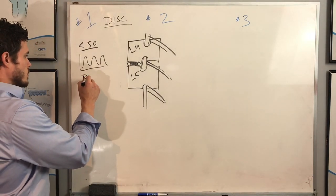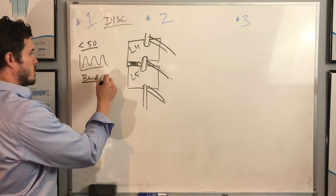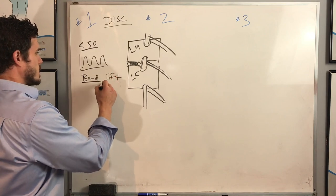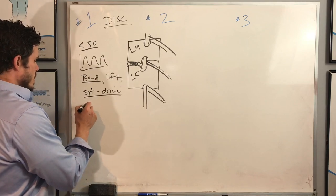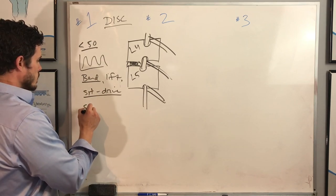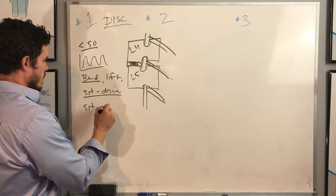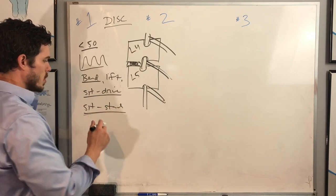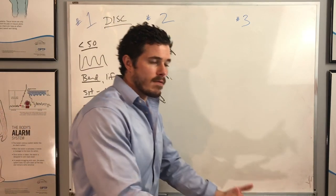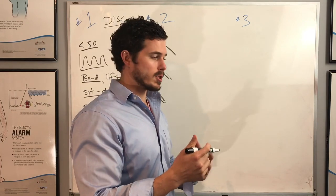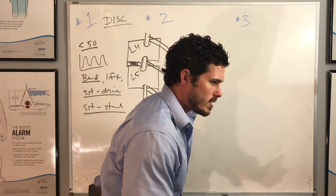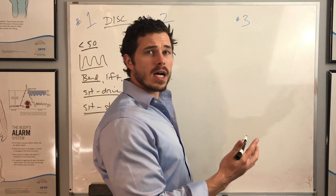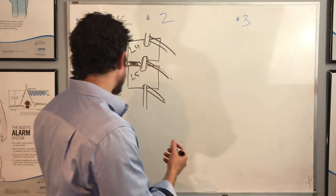Generally people with disc problems don't like to bend, lift, sit, or drive for any amount of extended period of time. When they do that, they might notice that they have trouble going from a sitting or a bent forward position to a standing position. So there's this idea of a struggle or a transitional problem where they just feel stuck and they have a really hard time straightening up if they've been bent over for a while.